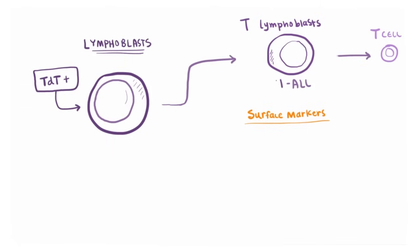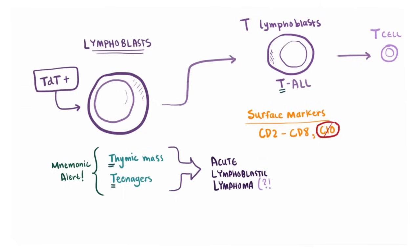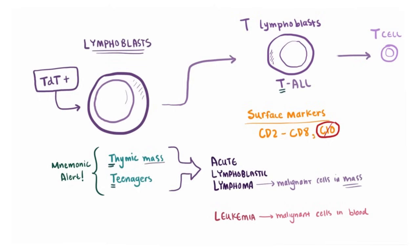For the T lymphoblastic sort, they usually express surface markers ranging from CD2 to CD8. Unlike B-ALL, these blasts do not express CD10. Helpfully, T-ALL usually presents as a thymic mass in the mediastinum — T for thymus — and this happens most often in teenagers — T for teens. This condition is actually called acute lymphoblastic lymphoma rather than leukemia, because for leukemias the malignant cells float around in the blood, while lymphoma means malignant cells are forming a mass — in this case the thymic mass.